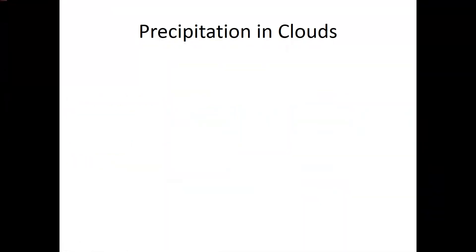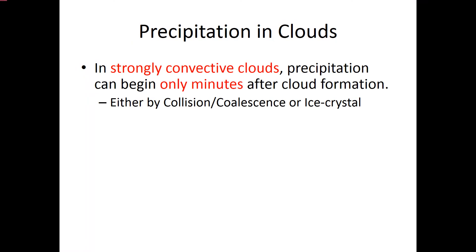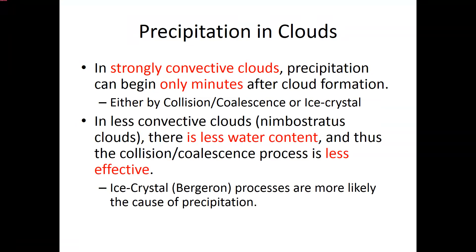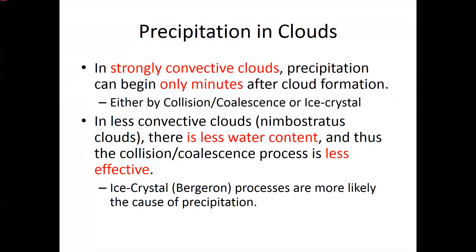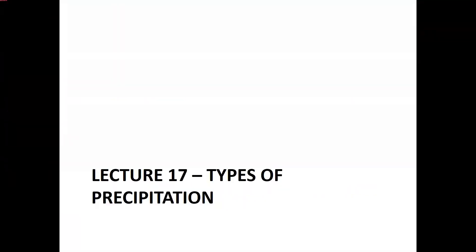In strongly convective clouds — where you go from clear skies to severe thunderstorm in minutes — precipitation can begin very quickly, either by collision and coalescence or the Bergeron process. However, in more typical, less convective clouds such as nimbostratus and other stratiform clouds, collision and coalescence usually doesn't set up fast enough. Therefore, the Bergeron process is the one that really happens: ice crystals develop, feed off the surrounding water, grow, fall, and then melt as they fall, forming rain. And that's it for this lecture.